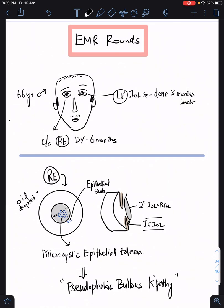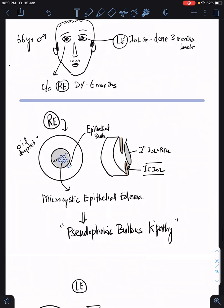Hello friends and welcome to this EMR rounds. In the last EMR rounds we discussed our patient who's a 66-year-old male presenting with complaints of right eye defective vision for the past six months. The patient was diagnosed to have right eye pseudophagic bullous keratopathy because the patient had microcystic epithelial edema and epithelial bullae were noted.